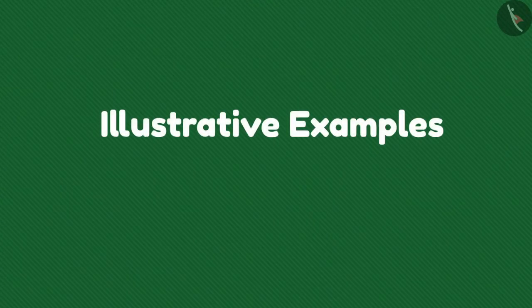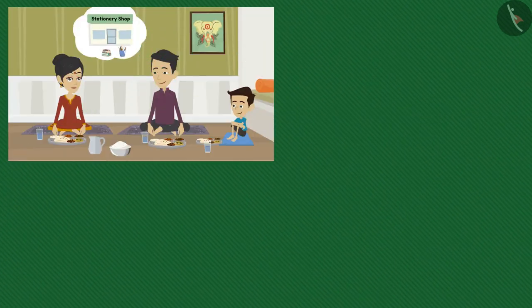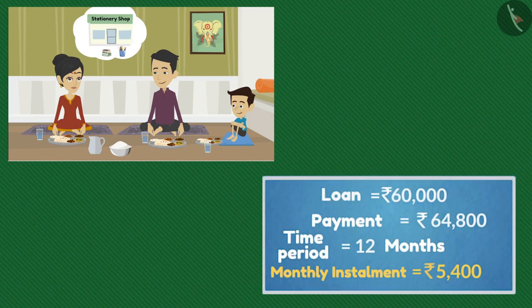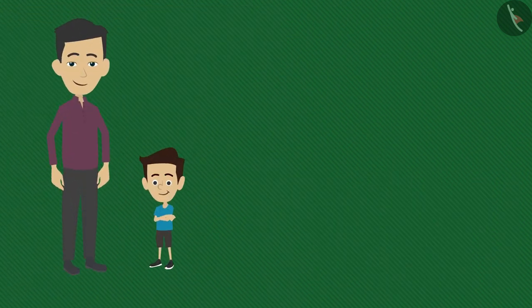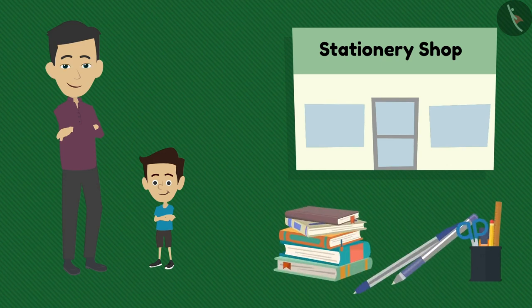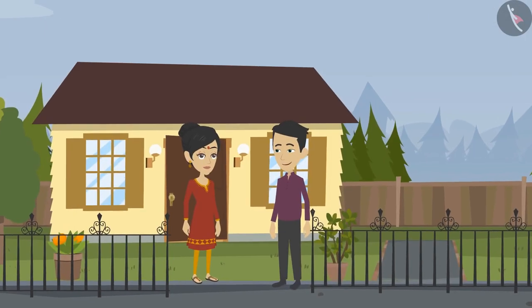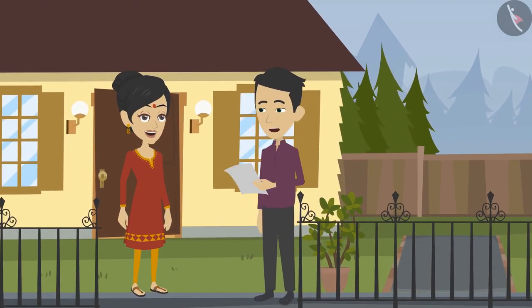Hello friends, welcome to this video. In the previous video we learned how Ramu and his family were thinking about taking a loan from the bank to start a new venture. Today we will see how Ramu and Sham are purchasing things for their shop. Our work has finally started — today I will go to market to buy things for my shop, and that is why I have made a list too.